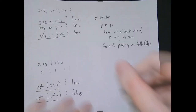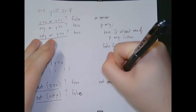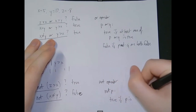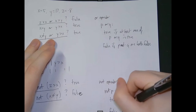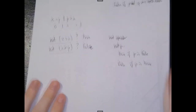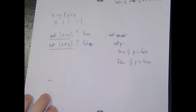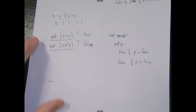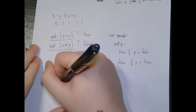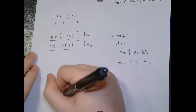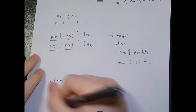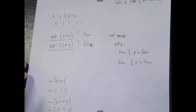The not operator: not P gives us true if P is false, and false if P is true. In MATLAB, we use the same tilde (~) that we used in not equal to. So ~(z > x) would be ~0, which is 1. Similarly, ~(x ~= y) would be ~1, which is 0.